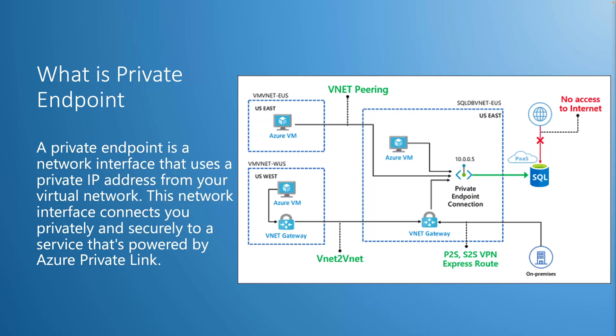Let's start our next topic: Private Endpoint connectivity to Azure SQL Database. What is a Private Endpoint? A private endpoint is a network interface that uses a private IP address from your VNet. This network interface connects you privately and securely to a service powered by Azure Private Link. By enabling a private endpoint, you are bringing the service into your virtual network. Traffic is secured to a private link resource, and the platform validates network connections. Private endpoint also supports network policies including Network Security Groups (NSGs), user-defined route tables, and application security groups.